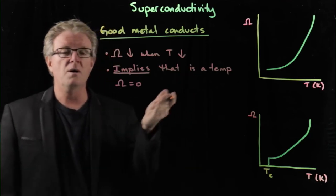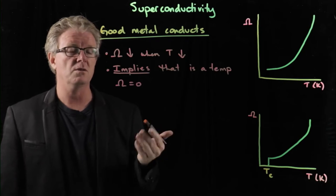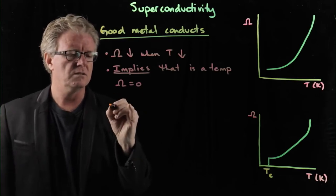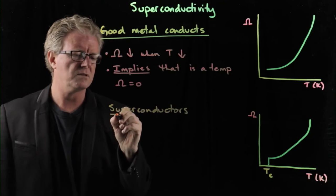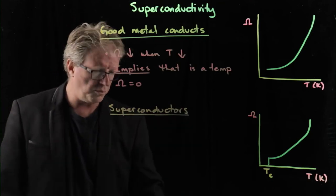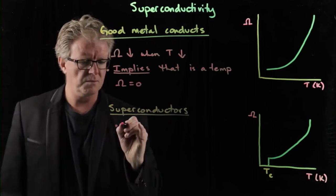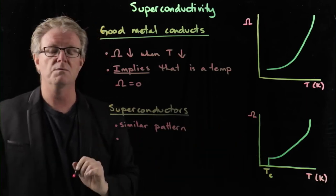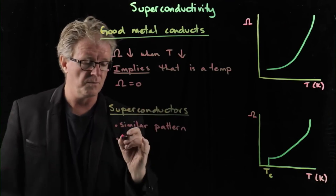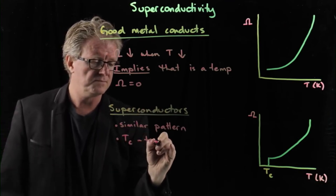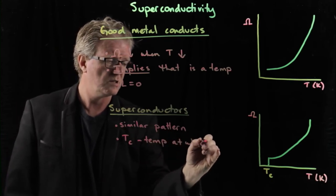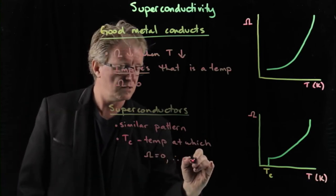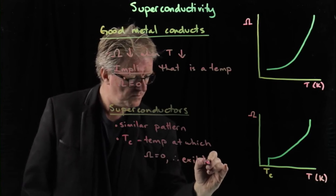Research was done to try and lower the temperature, and it was found that with certain metals they can show superconductivity properties. So superconductors are substances which show the property of superconductivity. There is a temperature at which they exhibit superconductivity, where the resistance goes to zero. So TC is the temperature at which resistance equals zero, and therefore it exhibits superconductivity.